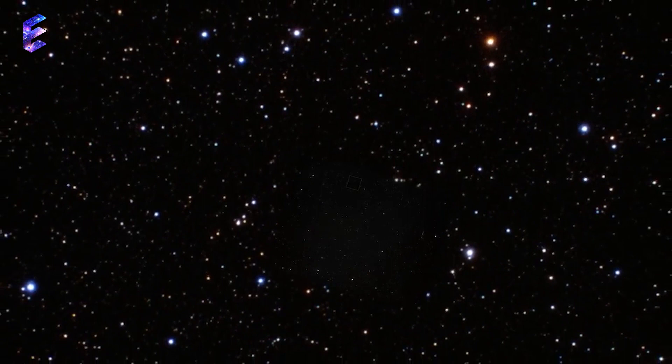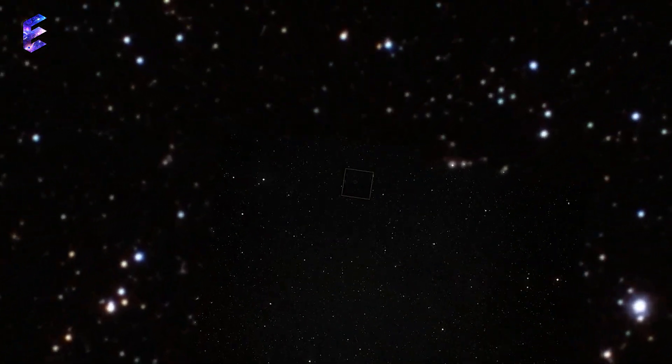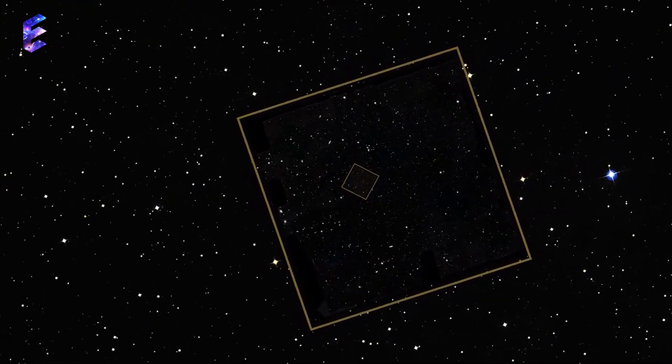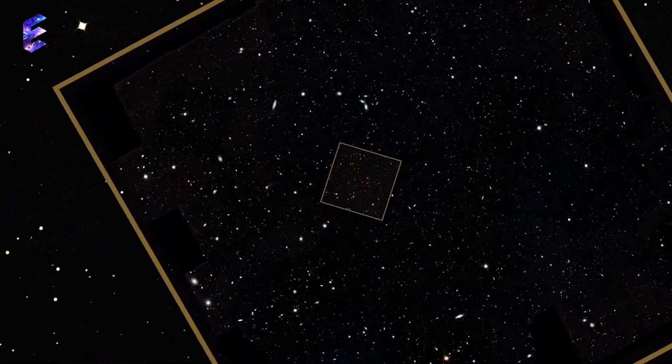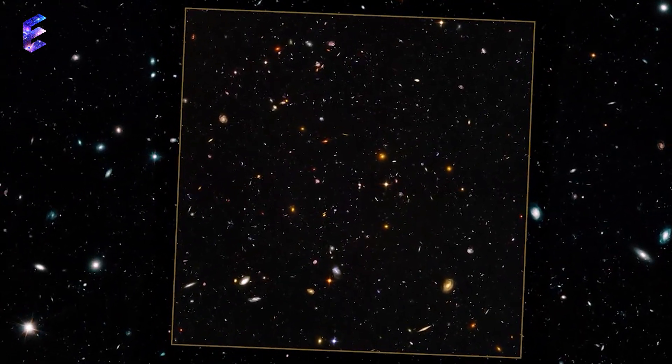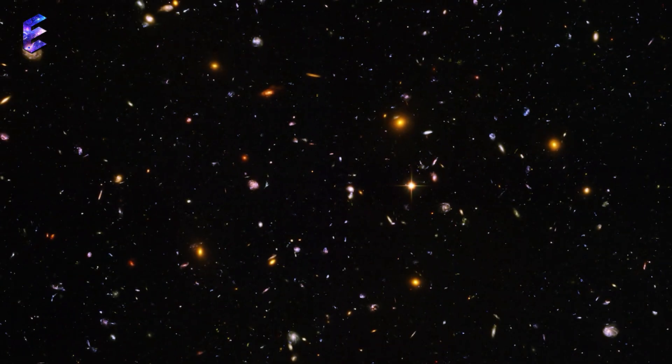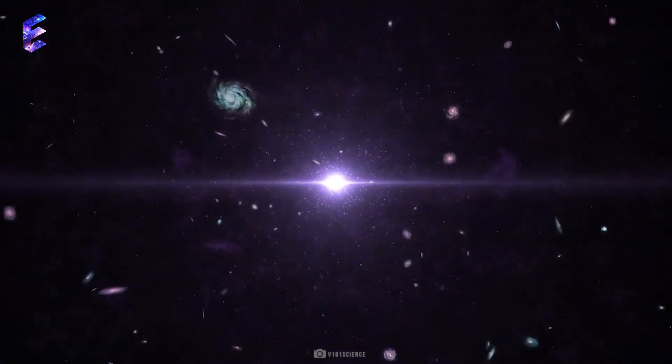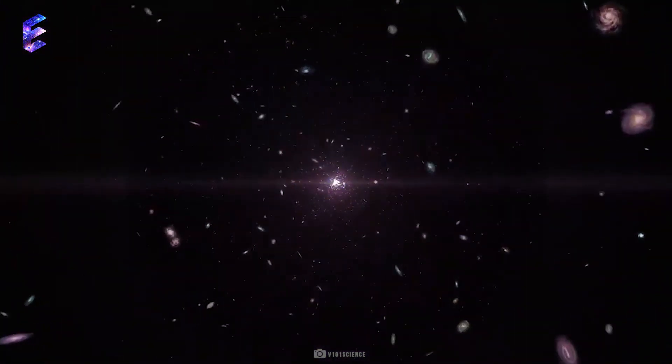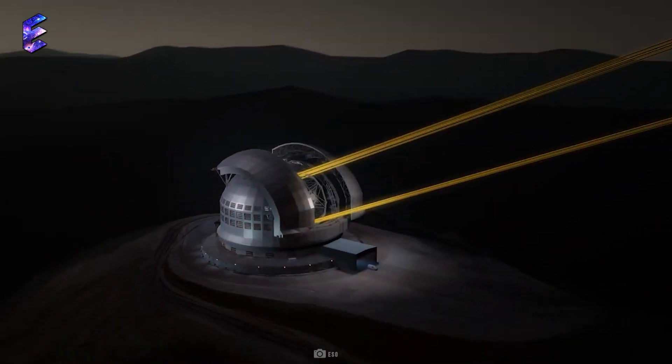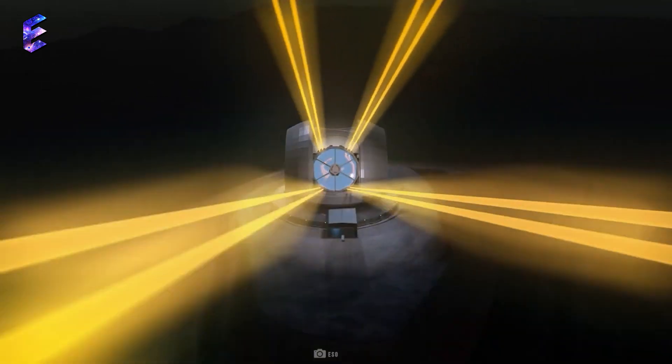The resulting image, the Hubble Deep Field, showed that the empty spot was actually filled with galaxies by the thousands, stretching back 12 billion years into the 13.8 billion year history of our universe. There were galaxies everywhere. The Hubble Deep Field showed that the early universe was even more crowded and exciting than most anyone had expected, offering observational treasures to the scientific community.